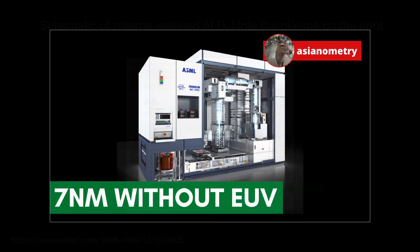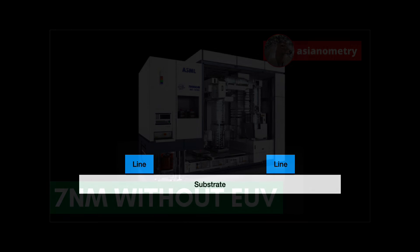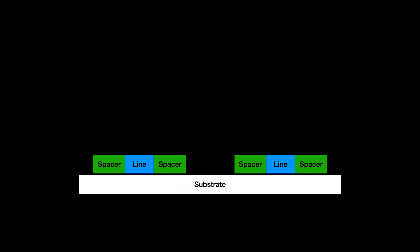In self-aligned double-patterning, or SADP, you run a photolithography step, then add oxide spacers — silicon dioxide or some other oxide — directly onto the lithography pattern. Then you do your etching and remove the spacers. Now you have lines twice as dense after just a single photolithography step.